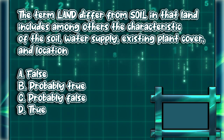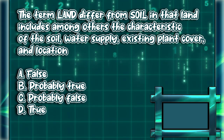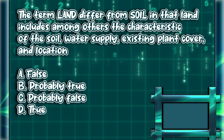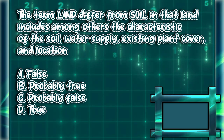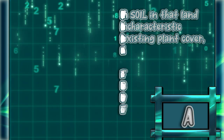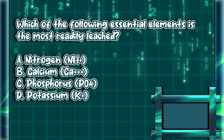The term 'land' differs from 'soil' in that land includes, among others, the characteristics of the soil, water supply, existing plant cover, and location. a) false, b) probably true, c) probably false, d) true. The answer is letter A.